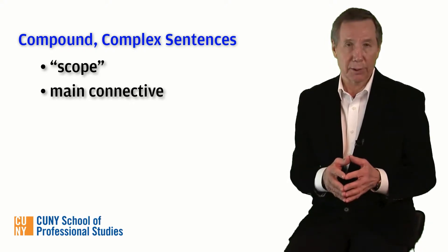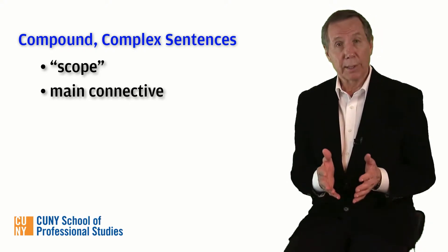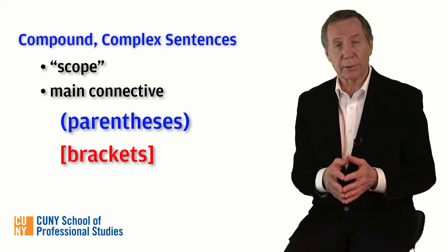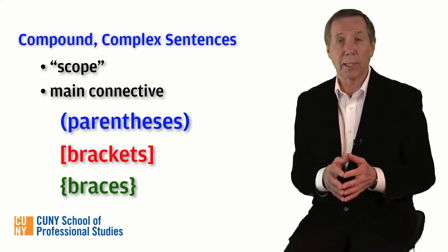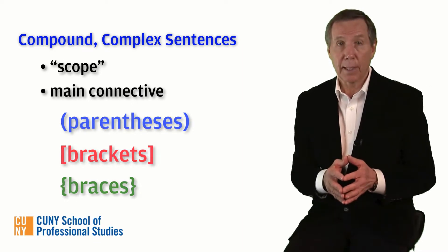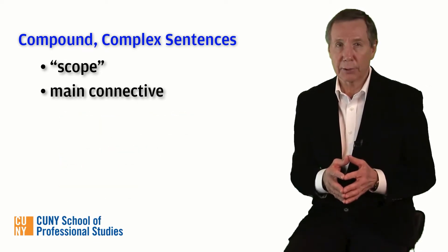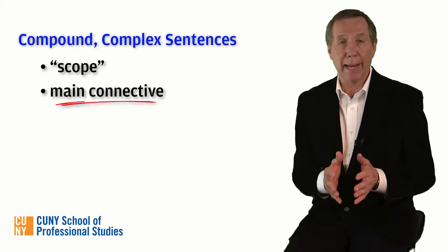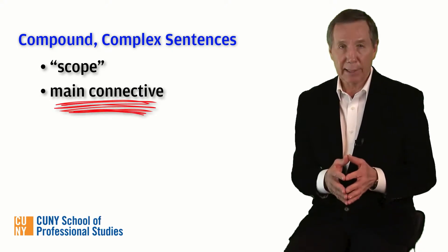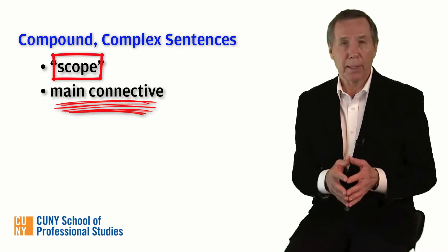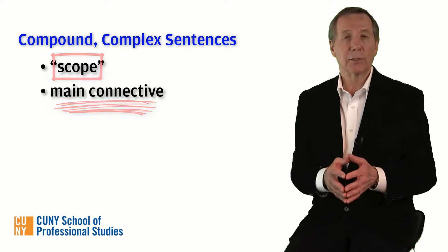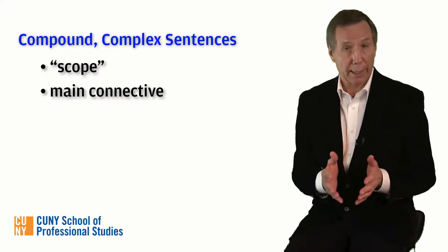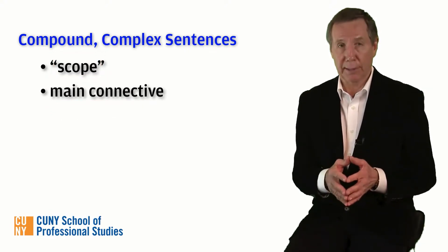This can get confusing. Happily, we can use parentheses, brackets, and braces to clarify the logical structure of the sentence and eliminate ambiguity. Every sentence in sentential logic should have an unambiguous main connective, and every connective in a sentence should have a clearly defined scope. To make the scope of a connective easier to determine, sentential logic uses certain widely accepted notational conventions.